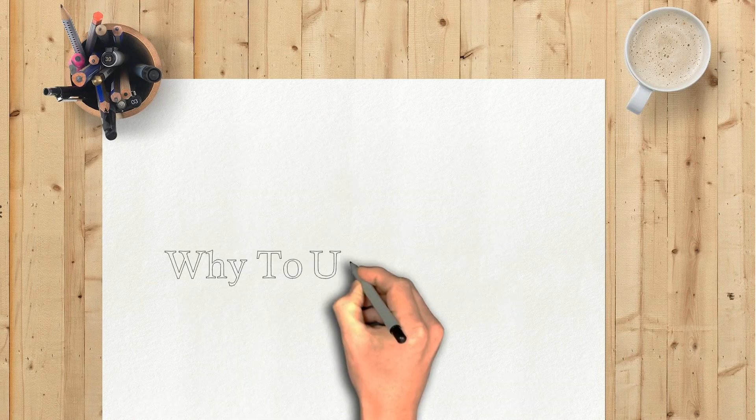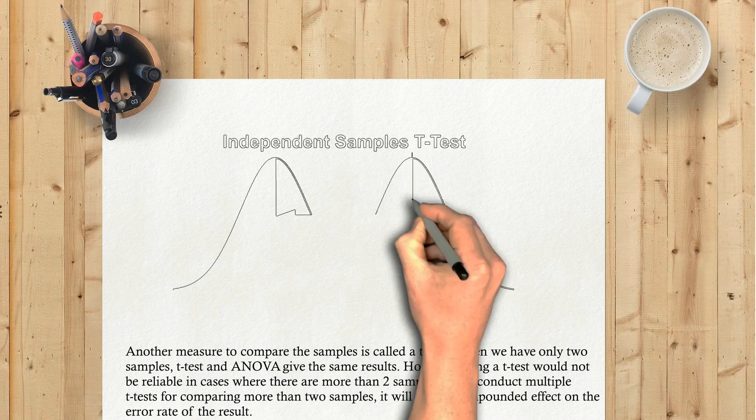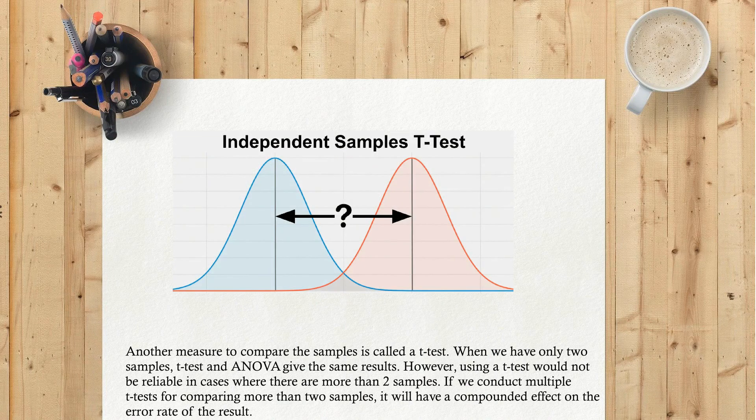Why use ANOVA? Another measure to compare the samples is called a t-test. When we have only two samples, t-test and ANOVA give the same results. However, using a t-test would not be reliable in cases where there are more than two samples. If we conduct multiple t-tests for comparing more than two samples, it will have a compounded effect on the error rate of the result.